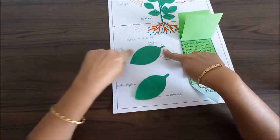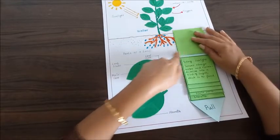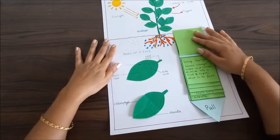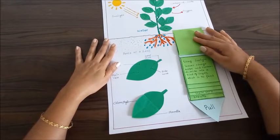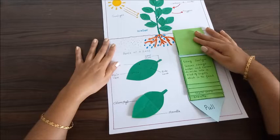Next, how does it use the sunlight? As soon as the sunlight falls on the leaves, using the sunlight, leaves change water and carbon dioxide into a kind of sugar, which is food for the plants.